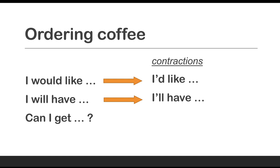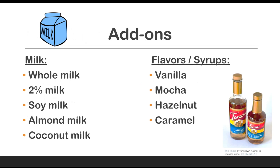With 'Can I get,' there's no contraction because it's a question. Next are different add-ons. On the left we have different kinds of milk. So if you order a latte or something that has milk, they might ask you what kind of milk. If you want just regular milk, that is whole milk — that is cow's milk. 2% milk is also cow's milk, but it has less fat, so it's a little healthier.